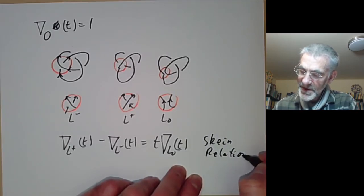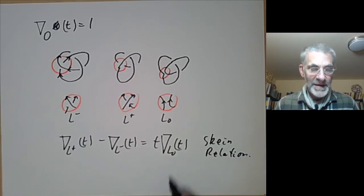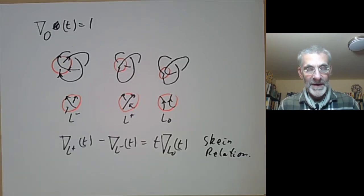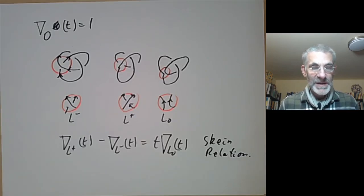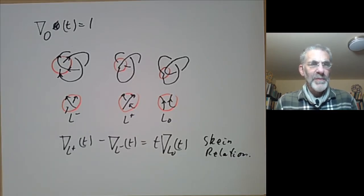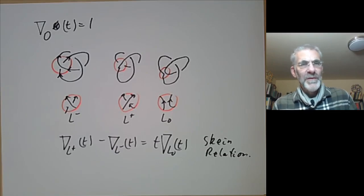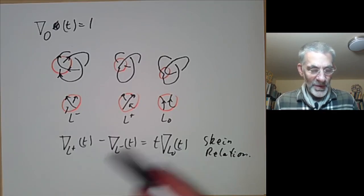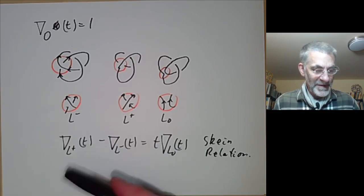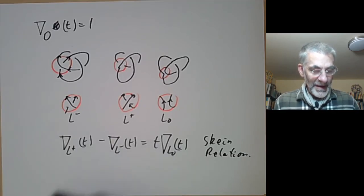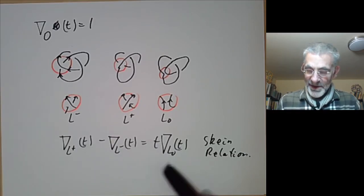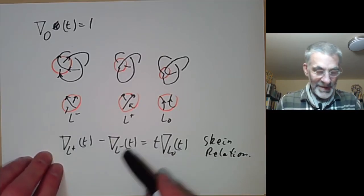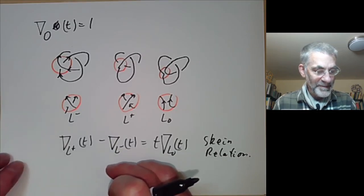This is the famous Skein relation. It was actually first discovered by Alexander in about the 1920s, but everybody forgot about it — he put it in a little footnote at the end of his paper that nobody paid attention to. So it got rediscovered, and it was only later realized that this was really first found by Alexander.